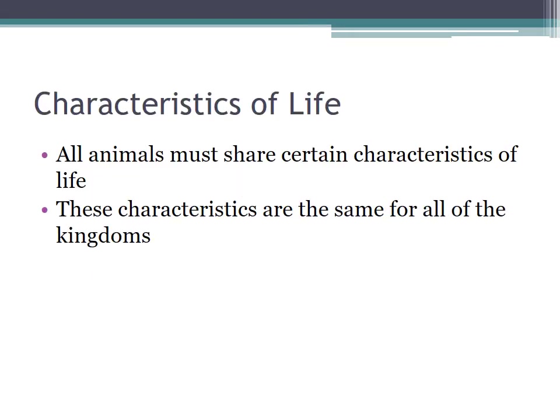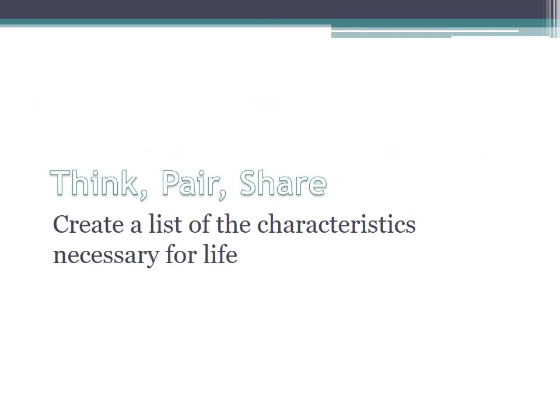The characteristics of life are things that everything living needs to have in order to be considered living. If it doesn't possess them, then it's not living. All animals must share these characteristics of life, and these same characteristics also apply to all the other kingdoms — bacteria, plants, fungi, and protists all need to have these same characteristics. Just like you did with the list of animals, think, pair, and share your way through the characteristics necessary for life, keeping in mind that all living things must possess them. Pause the video while you do that.